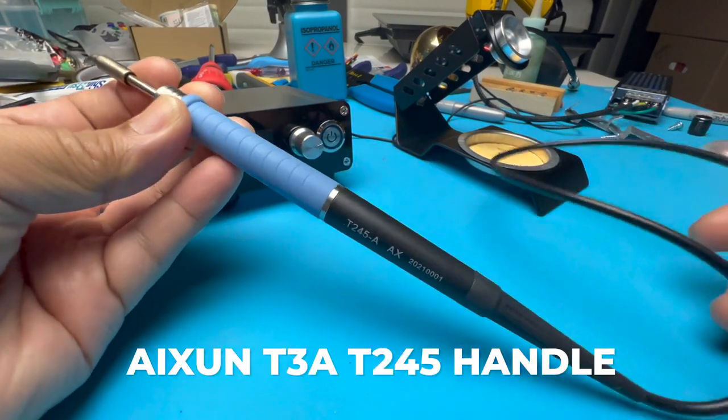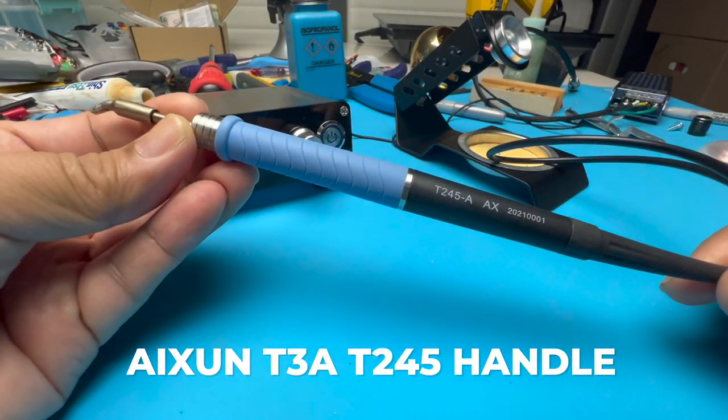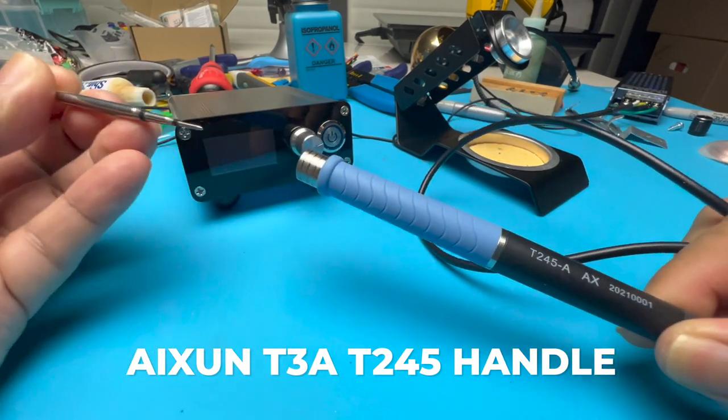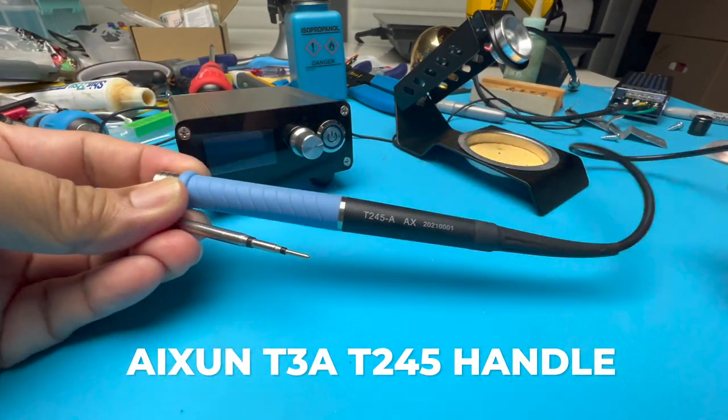For C245 tips, just use the Iksun T45 handle. These can be had for $13 shipped. Best of all, it doesn't require modification.